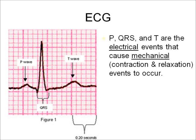The P, QRS, and T waves are electrical events that cause mechanical events — contraction and relaxation — to occur. It's very important to remember that those waves are electrical events, and they cause mechanical events to occur.